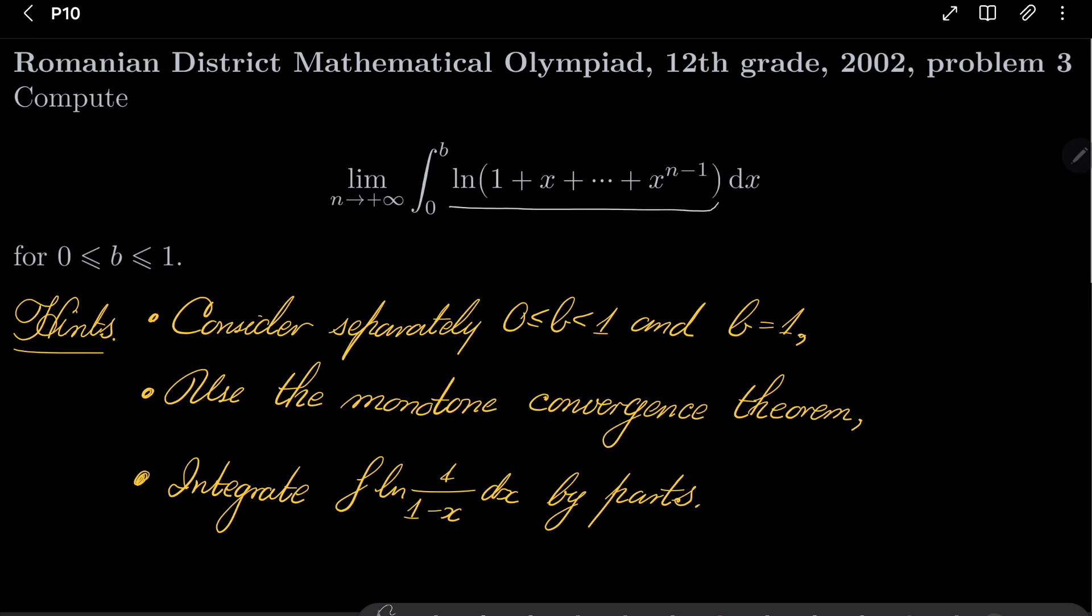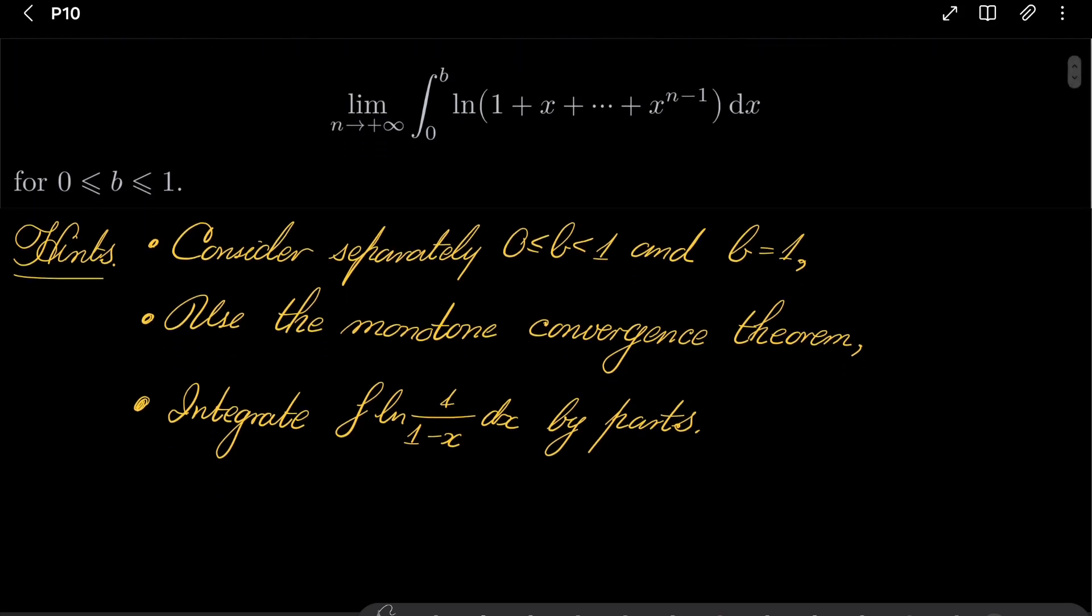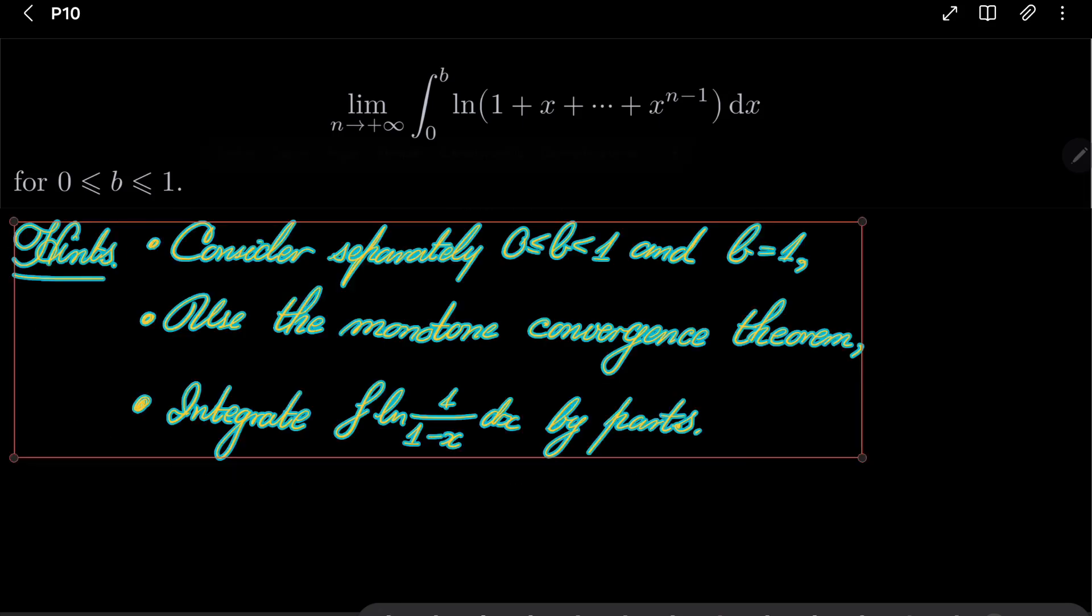So consider the sequence of these functions right here, show that it is increasing, and apply the monotone convergence theorem. And use the well-known formula for the sum of geometric progression and integrate. Along the way you should get integral of this function integrated by parts. So give this problem a try and I will see you in just a minute.